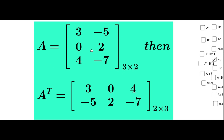There are 3 rows and 2 columns in A. Then Aᵀ equals the matrix 3, 0, 4, minus 5, 2, minus 7, which is of order 2 by 3. That means there are 2 rows and 3 columns.